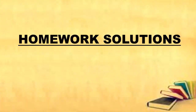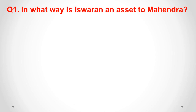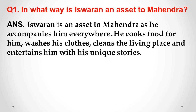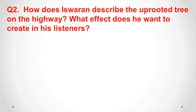Now the homework solutions for chapter number 3 of Moments. The first question is: In what way is Ishwaran an asset to Mahendra? Answer: Ishwaran is an asset to Mahendra as he accompanies him everywhere — he cooks food for him, washes his clothes, cleans the living place, and entertains him with his unique stories.